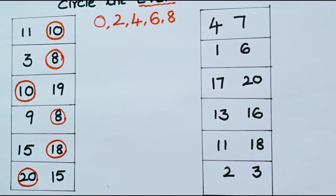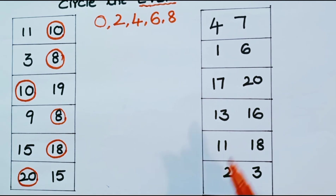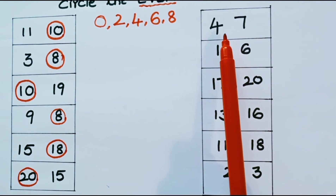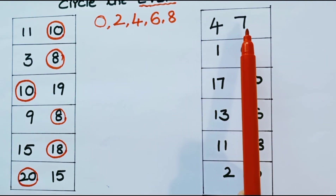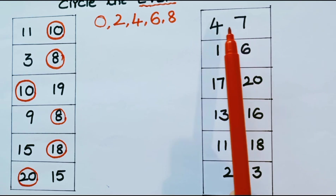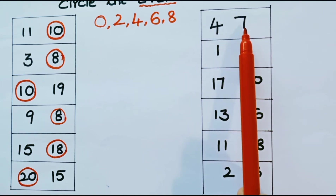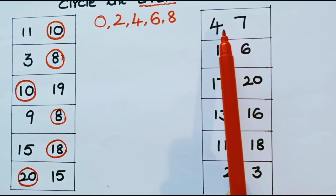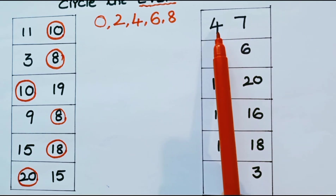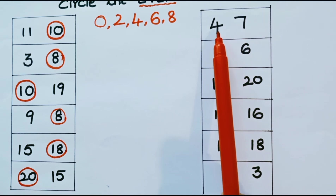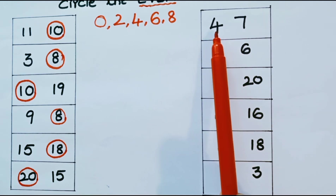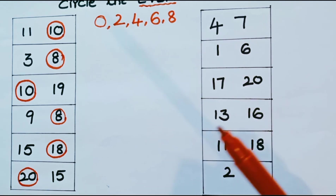Now look at the next column. In the first row, the numbers present are 4 and 7. In these two numbers, what is the even number? It is 4. Let us circle 4.